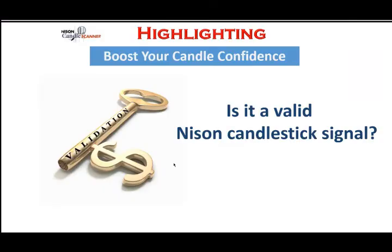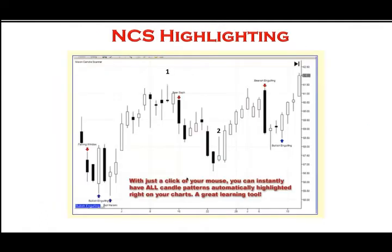Let's look at the first feature of NCS: highlighting. What highlighting lets you do is you pick any chart, pull up NCS, and when that chart comes up with NCS running in the background, you get candlestick signals automatically highlighted right in your charts. With just a click of your mouse, you can instantly have all candle patterns highlighted. It's a great way to confirm a candlestick signal and also a great candlestick educational tool.